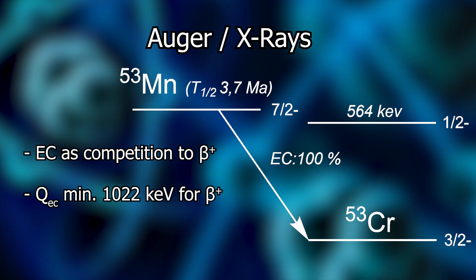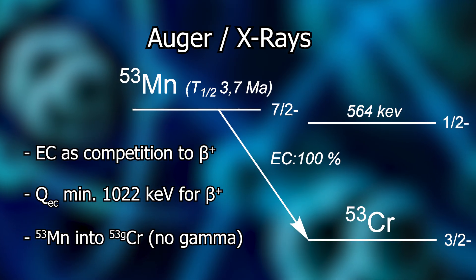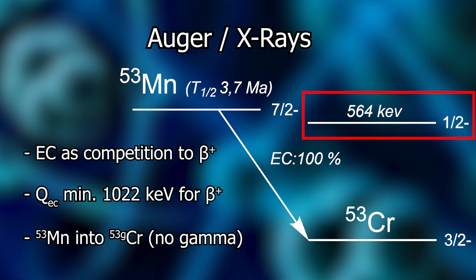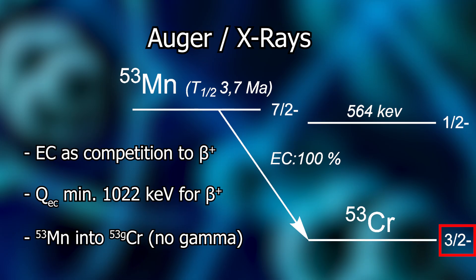It could be that manganese 53 does electron capture into an excited state of chromium 53, which would also fit in terms of energy. The first excited state of chromium 53 is at 564 kiloelectron volts, but in this state the nuclear isomer has a spin of one-half with negative parity. Manganese 53 has a spin of seven-halves with also negative parity, while the ground state of chromium 53 has a spin of three-halves. Therefore, the ground state of chromium 53 is more favorable, and the electron capture does not take place via the excited chromium — meaning we don't have any gamma emissions from this decay.